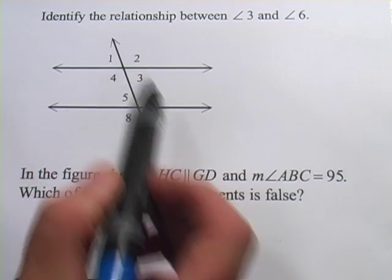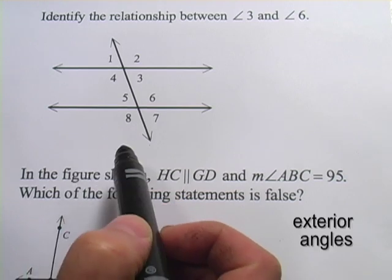And that would leave one, two, seven, and eight on the outside, and those are called exterior angles.